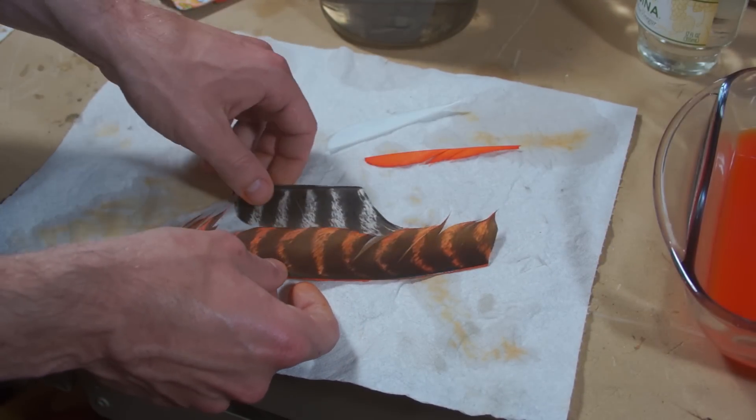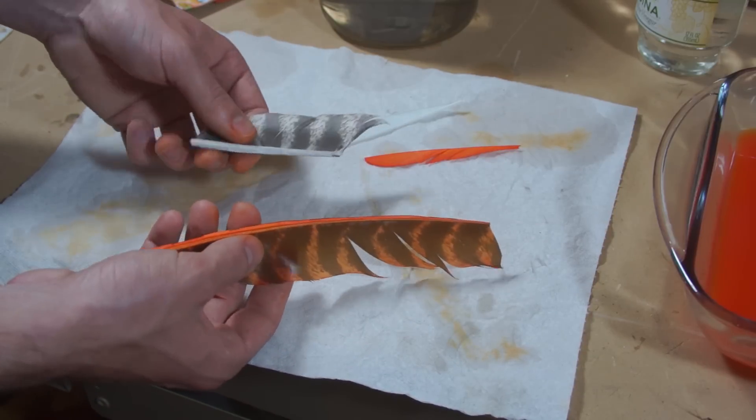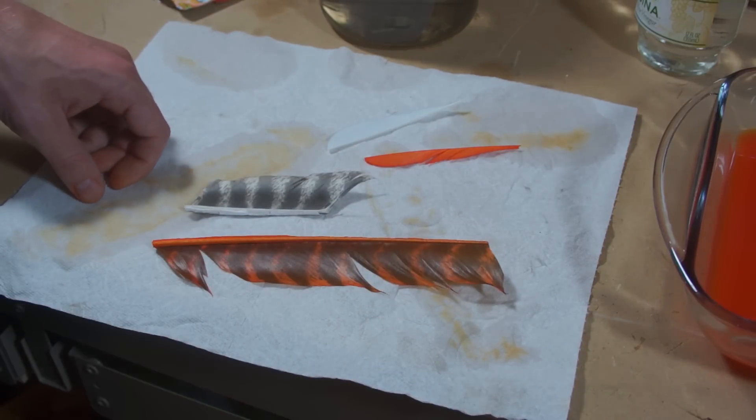White areas will take the dye, but the dark areas won't change much. So this should give you a good idea of what to expect when using Kool-Aid as a dye.